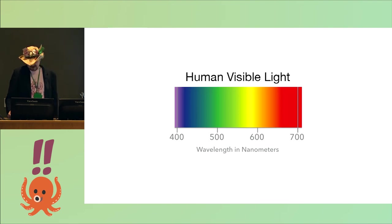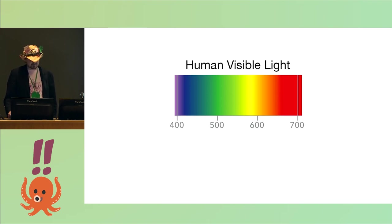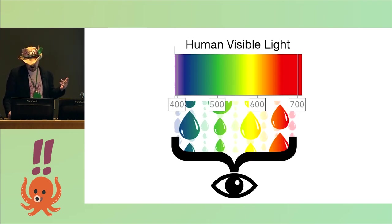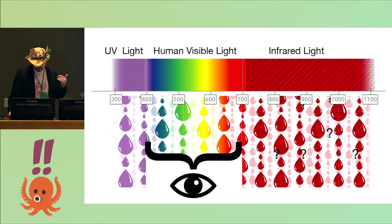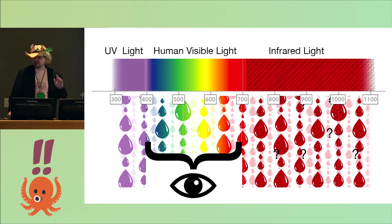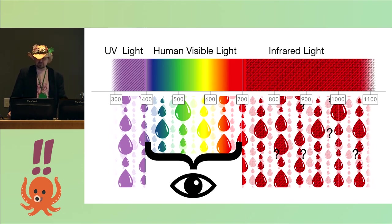Now as we look up at a rainbow, photons rain down upon us like so many droplets of splishy splashy color. However, our human eyes can only capture a certain range of those photons. Below the blue wavelengths, ultraviolet photons go unperceived, but those aren't what we're going to talk about today. And above the red wavelength, infrared photons are likewise not seen. This means the rainbow is hiding something.